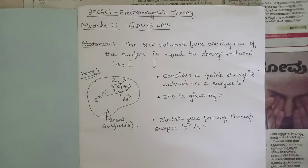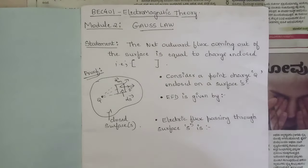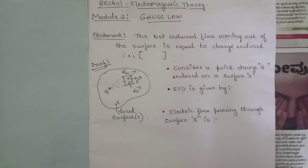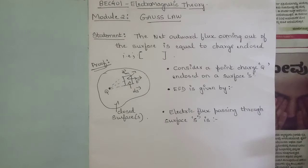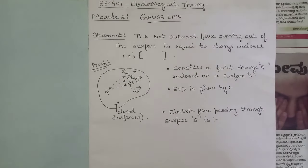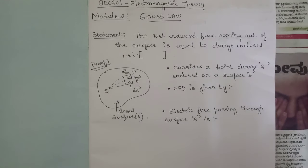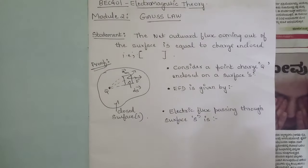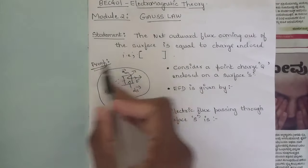Gauss's Law, which we have studied in physics before, states that the net outward electric flux going out of a closed surface is equal to the charge enclosed within the surface. This closed surface is also called the Gaussian surface. We are now going to derive the relation between electric flux and charge.